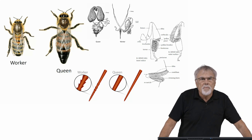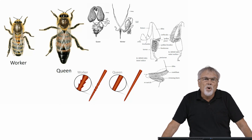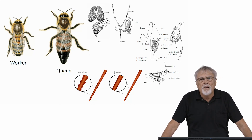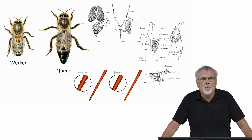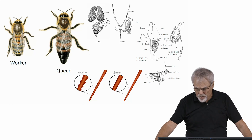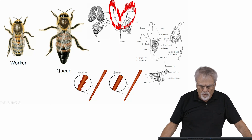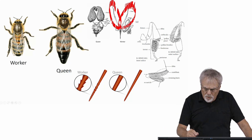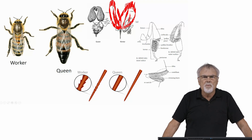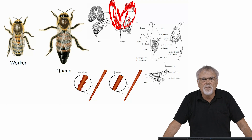In fact, there are about 160 to 180 ovarials per ovary for a queen. On the right, you can see there are very few ovarials per ovary for the worker. She still has paired ovaries, but there is only one or two ovarials usually associated with each ovary. So there are big differences in their reproductive potential.